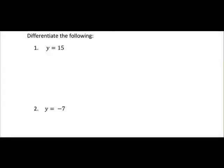Here we are differentiating constants. Now a constant is just a number on its own. So in this case we have two examples, 15 and minus 7.